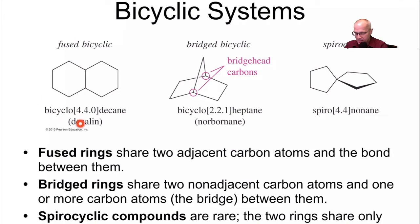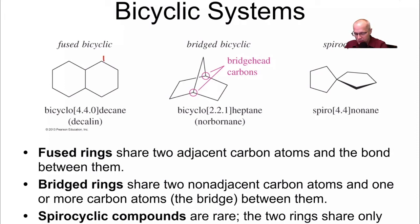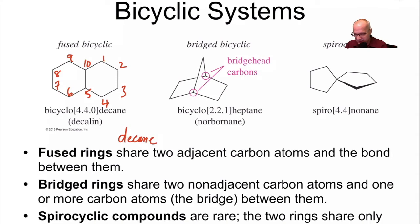Now let's look at the name: bicyclo[4.4.0]decane. Very simple naming system, actually — it looks complicated but it's one of the more simple ones. Count carbons: 1, 2, 3, 4, 5, 6, 7, 8, 9, 10. So there are 10 carbons in this bicyclic system — that's a decane. And it's a bicyclo system, so it's called bicyclo.